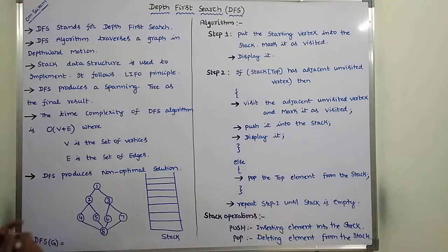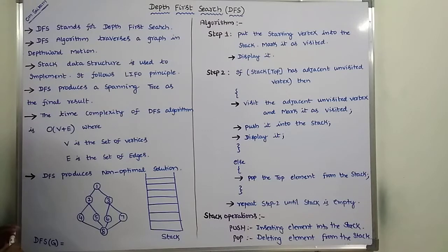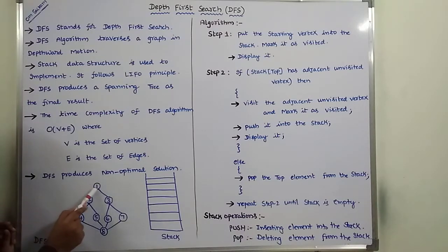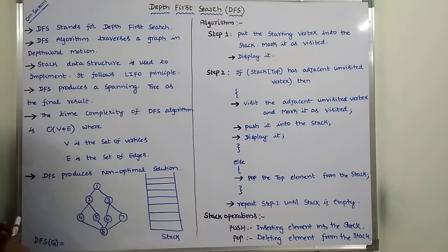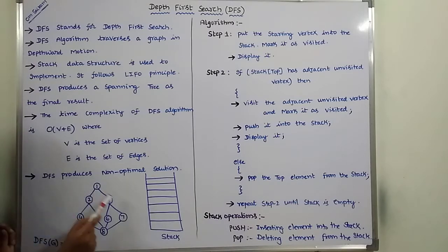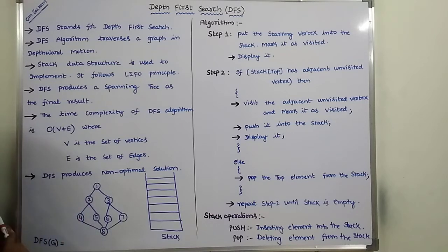What is depth-first motion? For example, take this graph. First, we have to take the starting vertex. The starting vertex has two adjacent vertices, 2 and 3. Among these two adjacent vertices, we have to select either vertex 2 or vertex 3. Suppose I am selecting vertex 2.